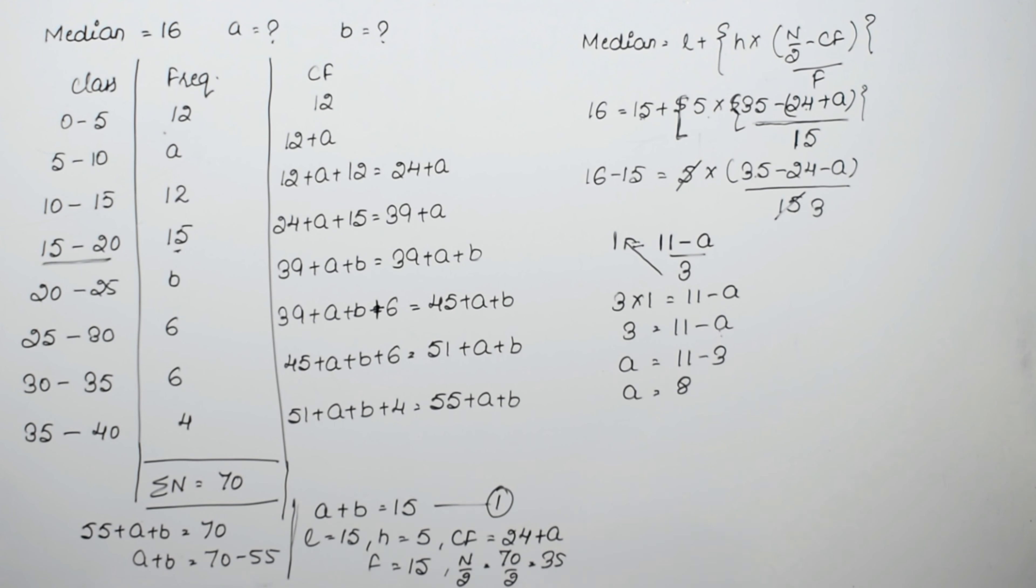We know A plus B equals 15. Since A equals 8, we have 8 plus B equals 15. Therefore B equals 15 minus 8, which is 7. This is the answer.